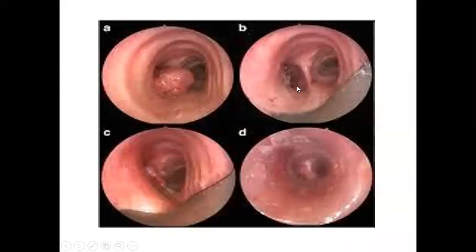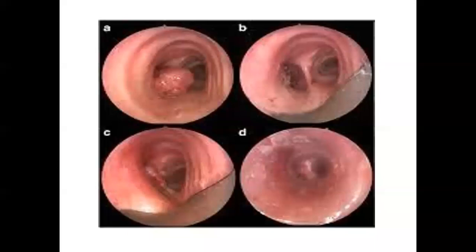After removing the foreign body, you enter into the left bronchus and examine it as well. Sometimes it happens that double foreign bodies are present — in the right bronchus, in the left bronchus, or in both bronchi. So it is very important that you examine both bronchi.